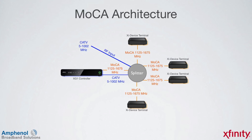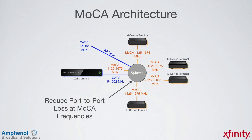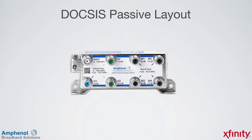We saw that only the XG controller and the XB gateways need standard cable TV frequencies from 5 to 1002 MHz to receive content and connect to the Internet. This content is then shared to the XI terminal devices via the MOCA frequencies, so no standard cable TV frequencies are needed to the XI terminal devices. We can limit only MOCA frequencies to the XI terminal devices, and by doing so we can redesign the splitter to have less port-to-port isolation between these ports. Also, limiting certain ports to only pass MOCA frequencies will help reduce ingress at the return frequencies. So we created a brand new type of device called the DOCSIS passive device.